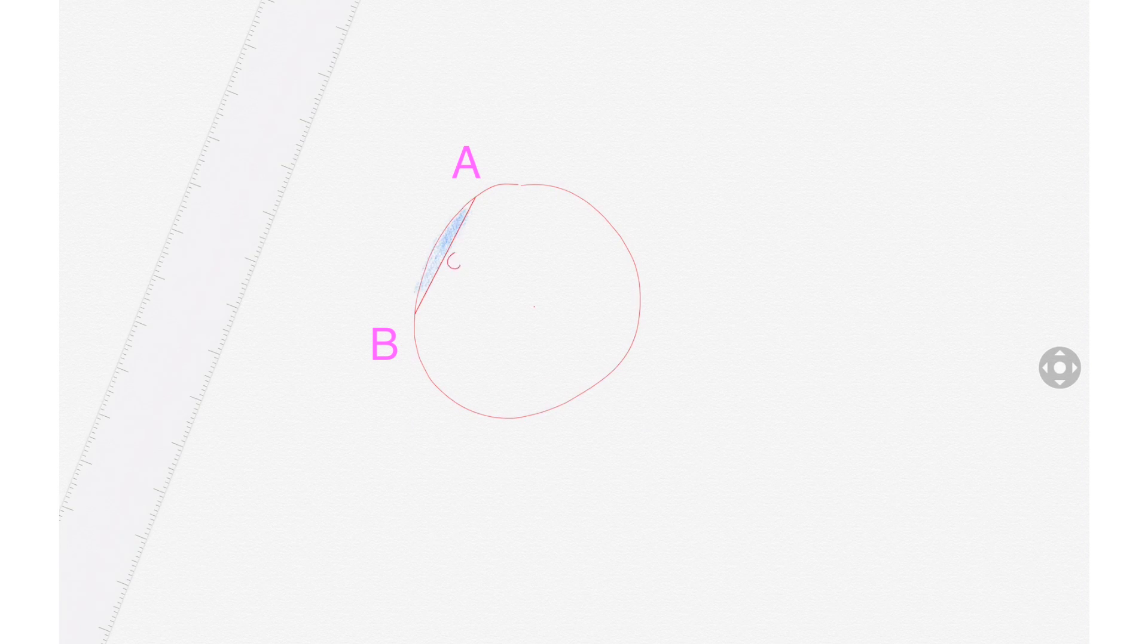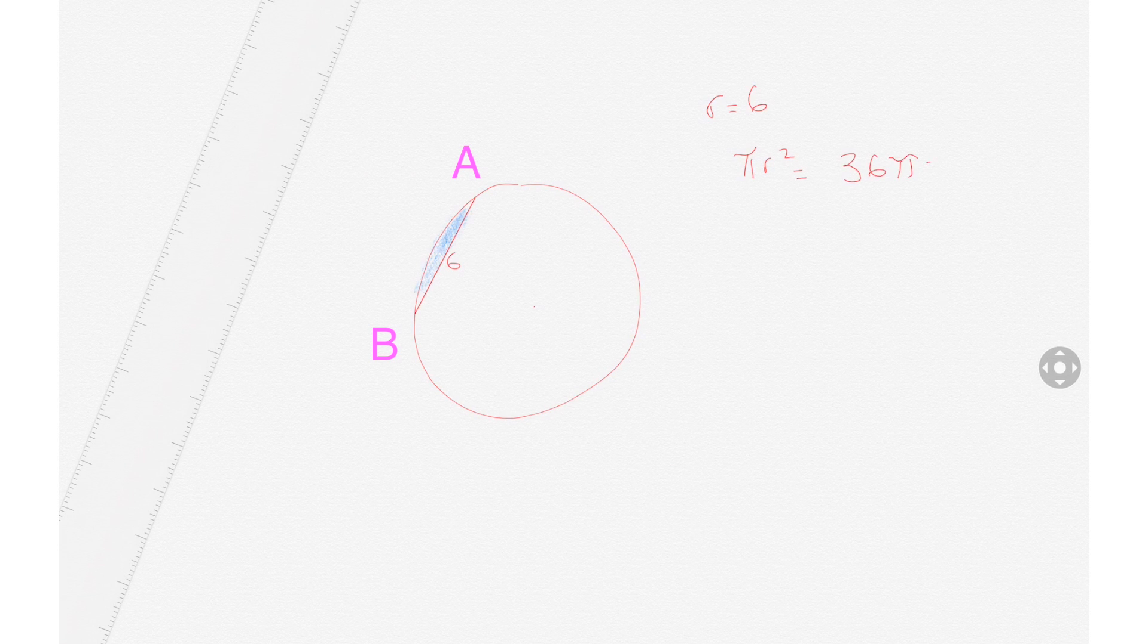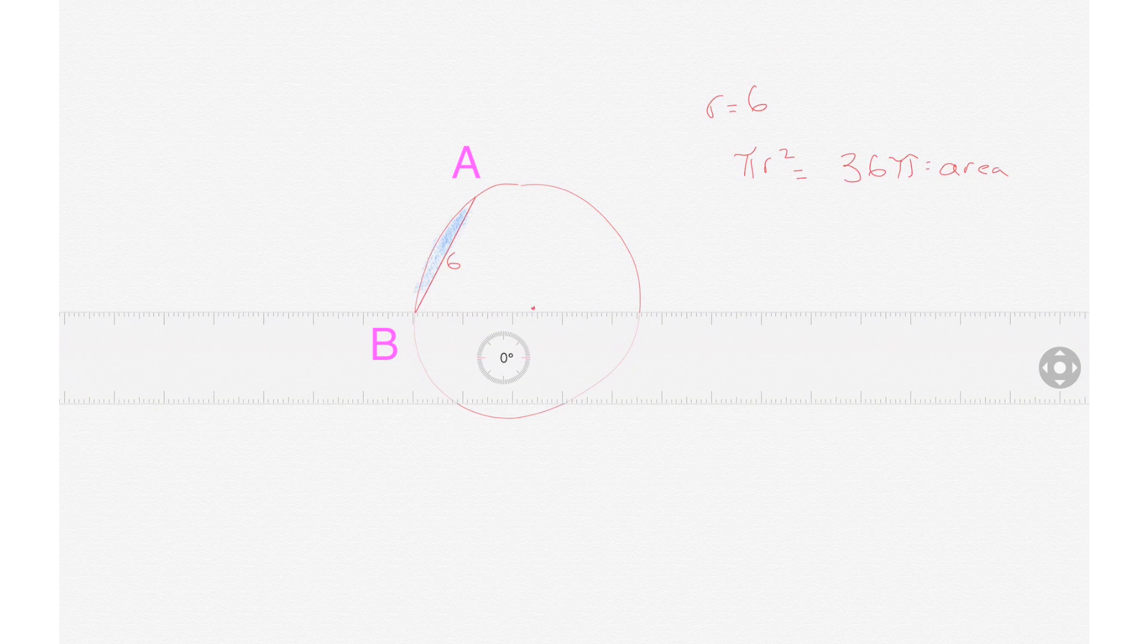So the first thing is you want to try to get the area of the whole circle. The formula for the area of the circle is pi r squared equals the area of the circle, and since the radius is 6, pi times 6 squared is 36 pi.